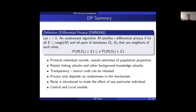To summarize this talk: differential privacy limits how much your information can change output probabilities. It protects properties of the individual while allowing inference of properties of the population. It resists linking attacks and other types of attacks. It's transparent — you can release the source code — and privacy only depends on randomness in the mechanism, not in the data. The main idea is that we add just enough noise to hide the possible effect of any one individual. There are two main models: the central model where you trust the data collector, and the local model where you don't.